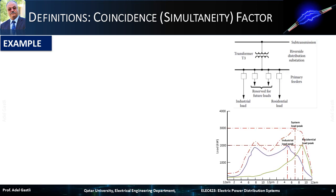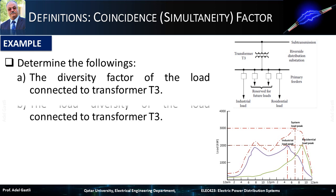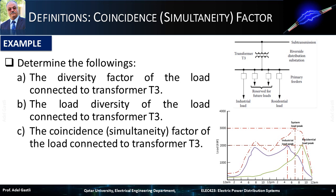Summing the two loads leads to the total transformer load curve shown in the figure, with a maximum of 3,000 kW occurring at 7 p.m. We need to determine the following: the diversity factor of the load connected to the transformer, the load diversity of the load connected to the transformer, and the coincidence or simultaneity factor of the load connected to the transformer.